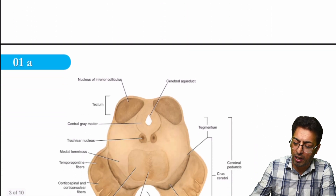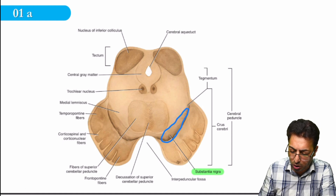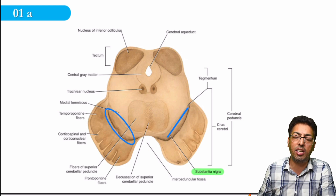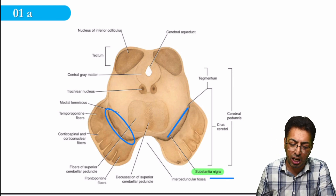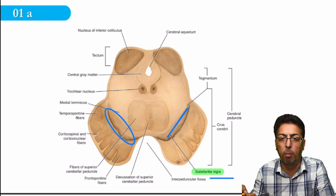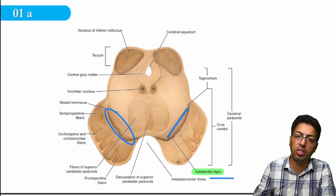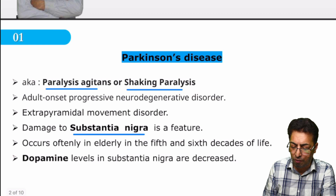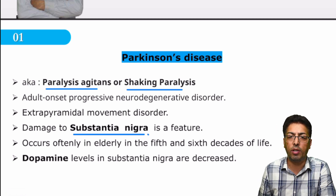Looking at the figure, you can see this area on one side and on the other side — these are the nuclei given the name substantia nigra. There is a problem in this nucleus, substantia nigra, that gives rise to the clinical manifestations of Parkinson's disease. This is at the level of the midbrain. So the important fact is that substantia nigra is involved in the pathogenesis of Parkinson's disease.